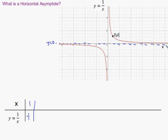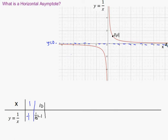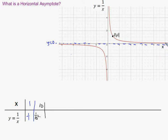If you plug in x equals ten, you get y equals one over ten, which simplifies to 0.1. So at x equals ten, the y value is already really small. I plot the point x equals ten, y equals 0.1 — it's so close to the x-axis, the curve is right there. That point, ten comma 0.1, is really, really close to the line y equals zero.